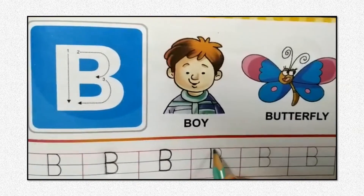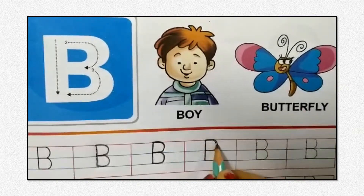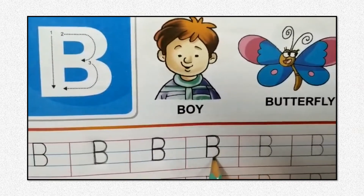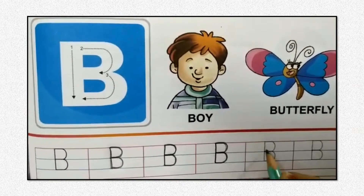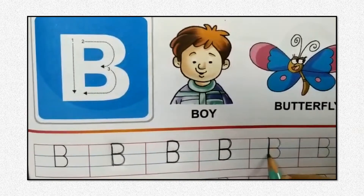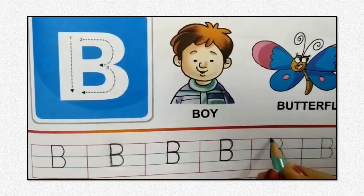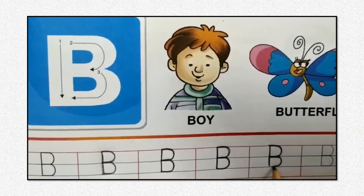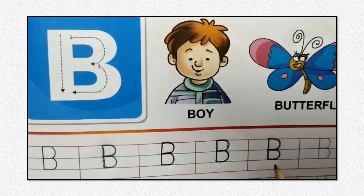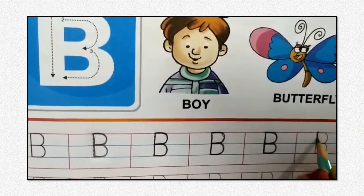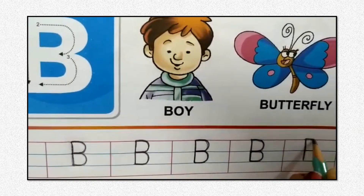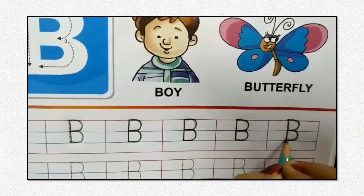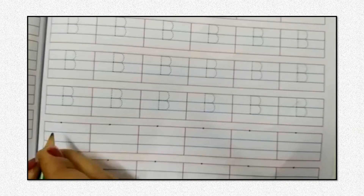Standing line, one backward curve, another backward curve — that is B. Standing line, a backward curve, one more backward curve — B. Standing line, backward curve, one more backward curve — B.